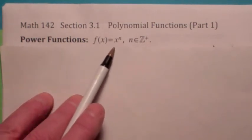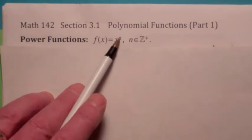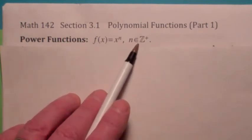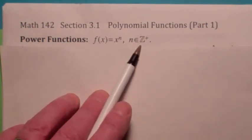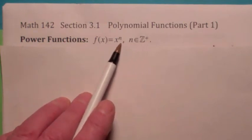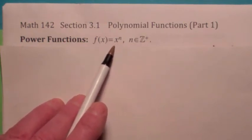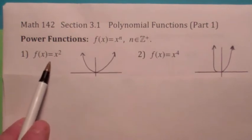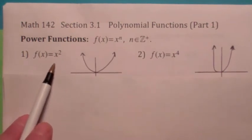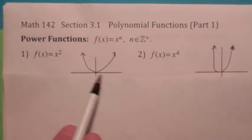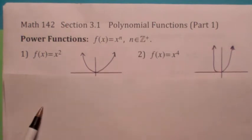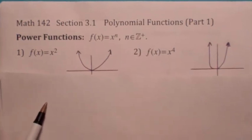A power function, you've seen this before, is x to a power. The power has to be a positive integer. Z plus means the positive integers. And we've already seen these, we know what x squared, x to the 2 looks like. This would be a power function of degree 2. x to the 4th, they look pretty similar. x to the 6th would have the same basic shape if it's an even power.